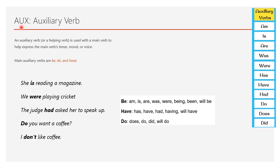Now, let's have a look at auxiliary verb. Auxiliary verb or helping verb is used along with main verb to express main verb tense, mood or voice. The main auxiliary verbs are be, have, do. The various variants of be are: Am, is, are in present. Was, were in past. Have, has, had, having. Do, does, did. These are auxiliary verbs. She is reading a magazine. Is is an auxiliary verb. We were playing cricket. Do you want a copy?